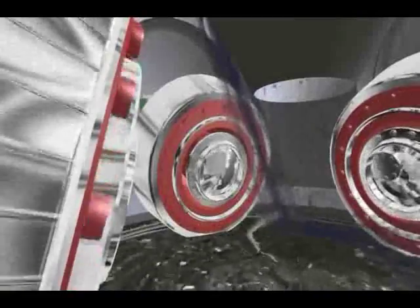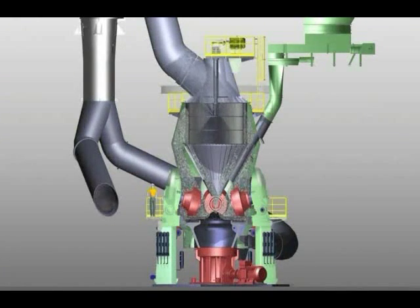The grinding rollers roll over the coal, which is comminuted by the force of the hydropneumatic roller spring system. The rotation of the grinding table throws the coal outwards to the area of the louver ring, which surrounds the table, where it is dried by hot gases.